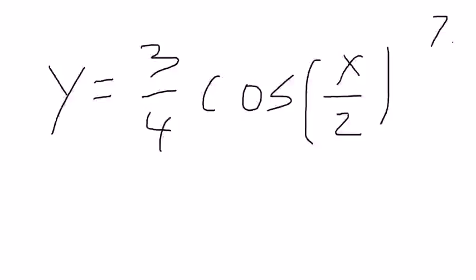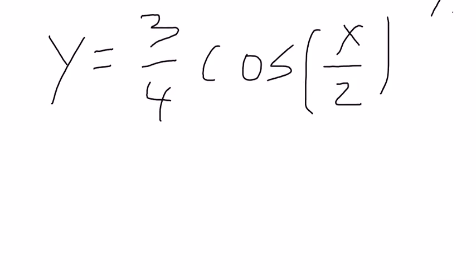This is number 7 from the homework today. It's 3 4ths cosine x over 2.